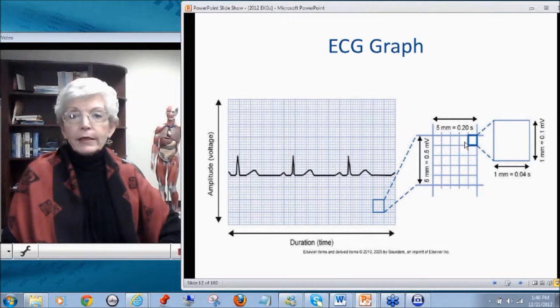And each one little box, as you can see, is one millimeter, and it's also equal to 0.04 seconds. So if one little box is 0.04 seconds, five times that, one, two, three, four, five, five little boxes is five times 0.04, or one big box would be 0.20 seconds. And if you were to go up five boxes in amplitude, that would be five millimeters amplitude.